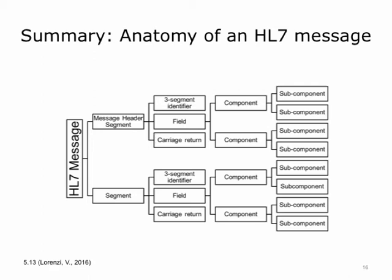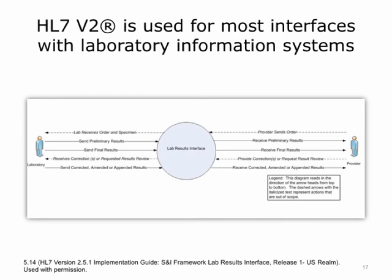In summary, an HL7 message is made up of segments. A segment is a group of related fields. Each segment begins with a three-character segment ID and ends with a carriage return. The very first segment of every message is the MSH segment. The fields in a segment can sometimes be further broken down into components and subcomponents. Field components and subcomponents are strung together in a linear fashion with delimiters such as a vertical bar, tilde, circumflex, and ampersand, which separate the fields, components, subcomponents, or repetitions.